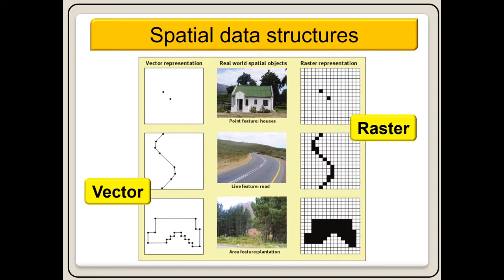Representing spatial data structures on vector or raster: with vector representation, a building is represented by two dots, and on raster only two small colored squares appear. The line feature — a road — will be various points connected with a line. With the area feature — a plantation — more blocks are colored in, and the more pixels you have, the more crisp and clear your image of the plantation will be.